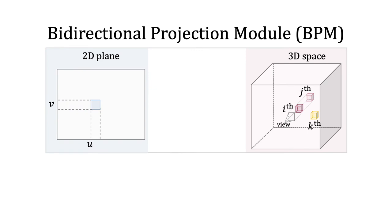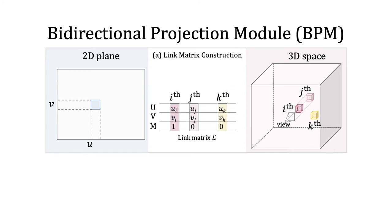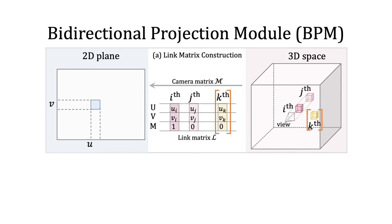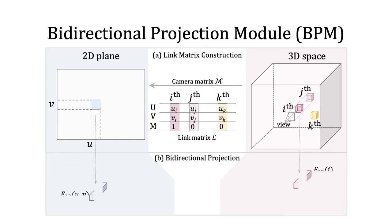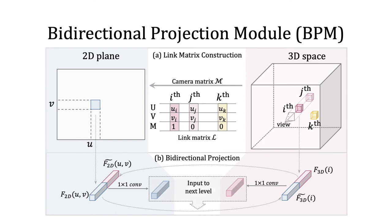Let's introduce the process of the bidirectional projection module under the single-view case. For the multi-view process, please refer to our paper. Inside the module, we first construct a link matrix between voxels and pixels according to perspective projection. Voxel I, G, and K stand for three types of voxels: voxel I has corresponding pixels under this viewpoint, voxel G is occluded by others, and voxel K is out of the view frustum. To address occluded voxels and voxels out of the view frustum, we add a binary mask in the link matrix to indicate whether each entry is valid. Having the constructed links, we project features bidirectionally. The projected features are fused with the original domain features using a 1×1 convolution and then fed into the next level.